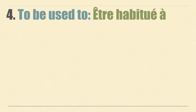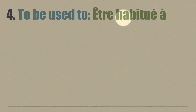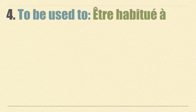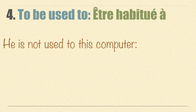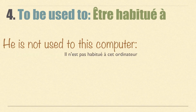Now a fourth way to translate 'to be used to', this time with the verb être. The expression is être habitué à. Because we have the verb 'to be' with an adjective, habitué, there is an agreement: if a girl is speaking, you need an additional e at the end — habitué(e). The preposition here is à. Using the same example: 'He is not used to this computer' — il n'est pas habitué à cet ordinateur.